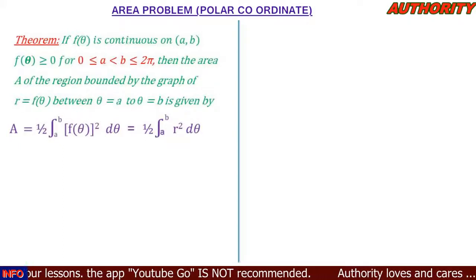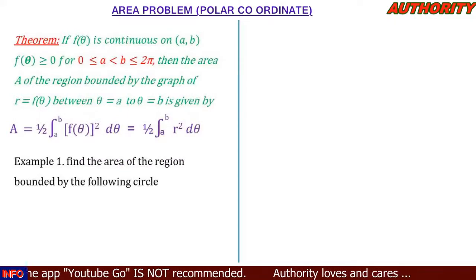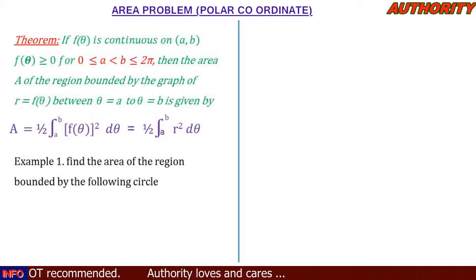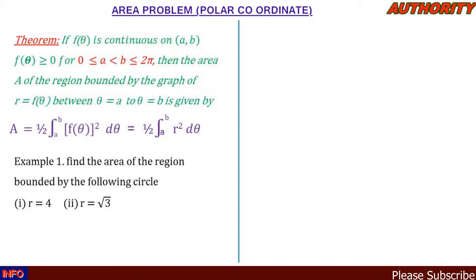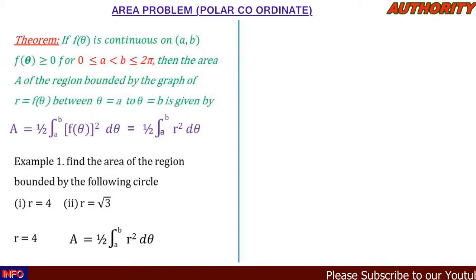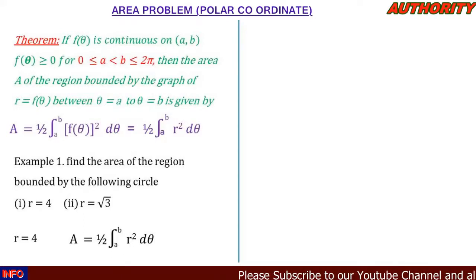Now let's take a look at this question: find the area of the region bounded by the following cycles. (i) r is equal to 4; (ii) r is equal to square root of 3. Solution: for the first one, r is equal to 4, and the formula says that A is equal to one-half times the integral from a to b of r squared d-theta.